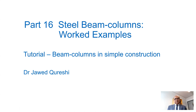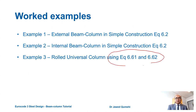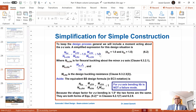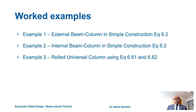In this tutorial, I will solve three examples. The first two examples are related to column in simple construction where I will use the simplified equation 6.2, and the third example is related to two complicated equations where we have to check both. I will use a simplified procedure as mentioned in the Steel Construction Designer's Manual. Let us solve our first example.